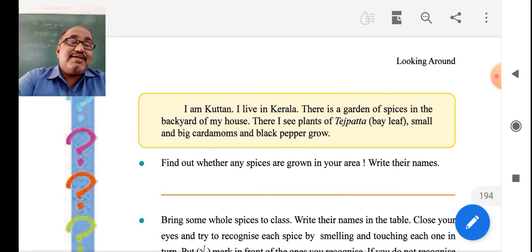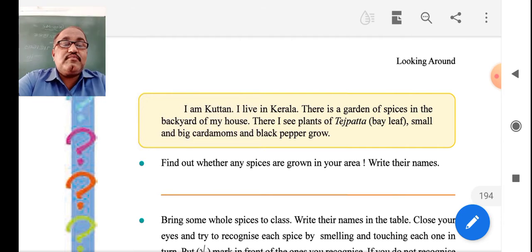Kutan is living in a Kerala garden of spices and he explained that in the backyard of the garden, he saw tejpata, bay leaf, small and big cardamoms and black pepper.